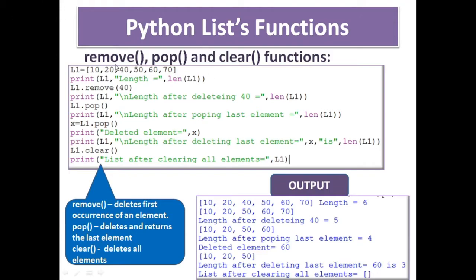First of all, the remove function. Here is a list L1 defined as 10, 20, 40, 50, 60, 70 and I am printing the list as well as its length. Thereafter I have removed the element 40 using L1.remove. The remove method deletes the first occurrence of an element — if 40 appears multiple times, the first 40 will be deleted.